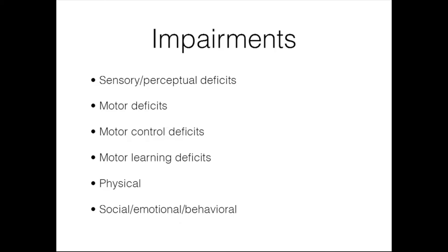Children with DCD have motor control deficits — inappropriate and ineffective muscular activation and sequencing, and a less effective method of muscular organization, so they really can't activate, sequence, and organize movements very well. They also have motor learning deficits: a limited movement repertoire, lack of adaptability and flexibility, high variability and inconsistency in motor performance, and an inability to correct movement patterns.